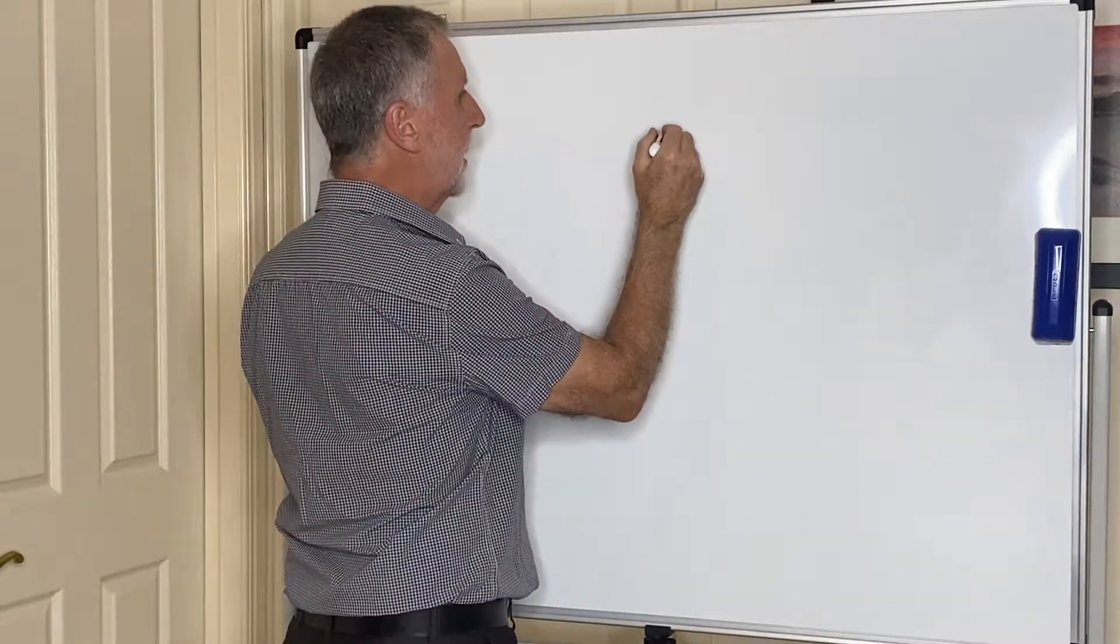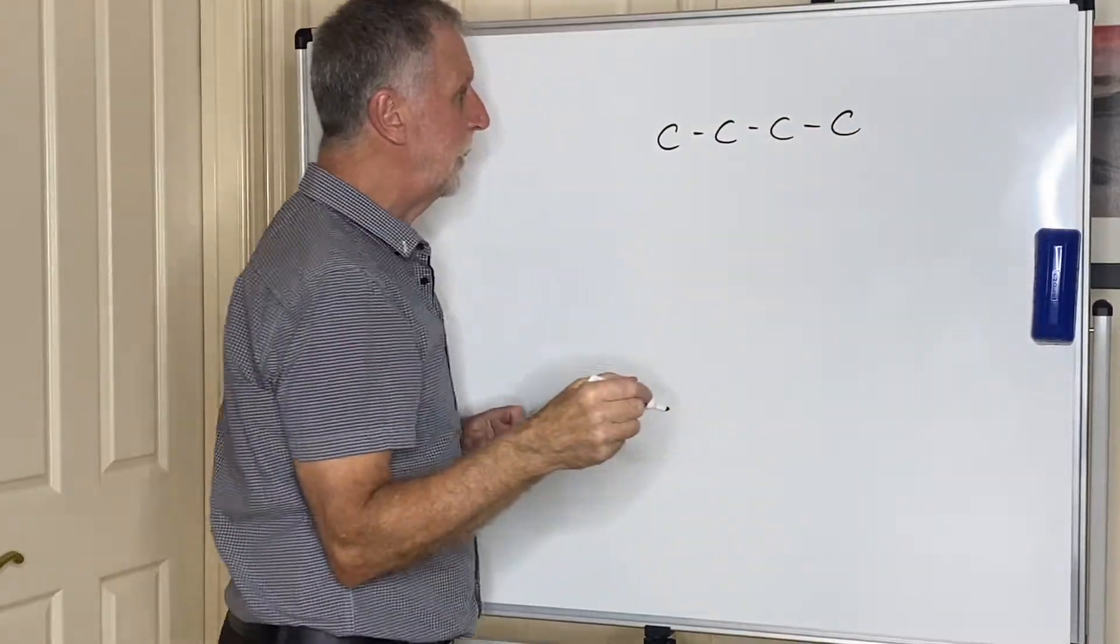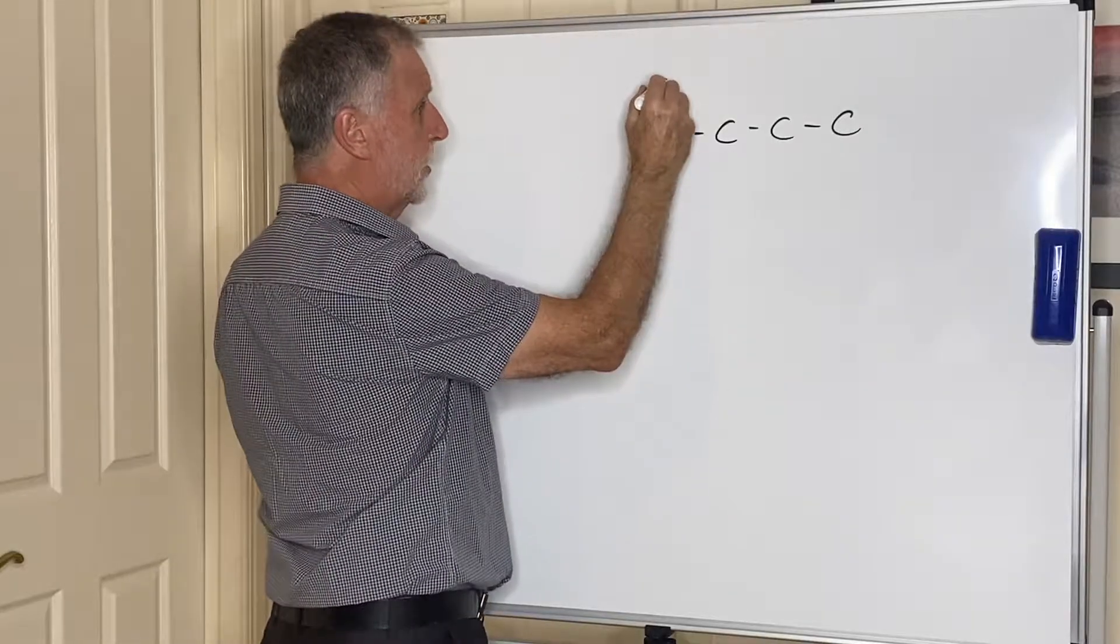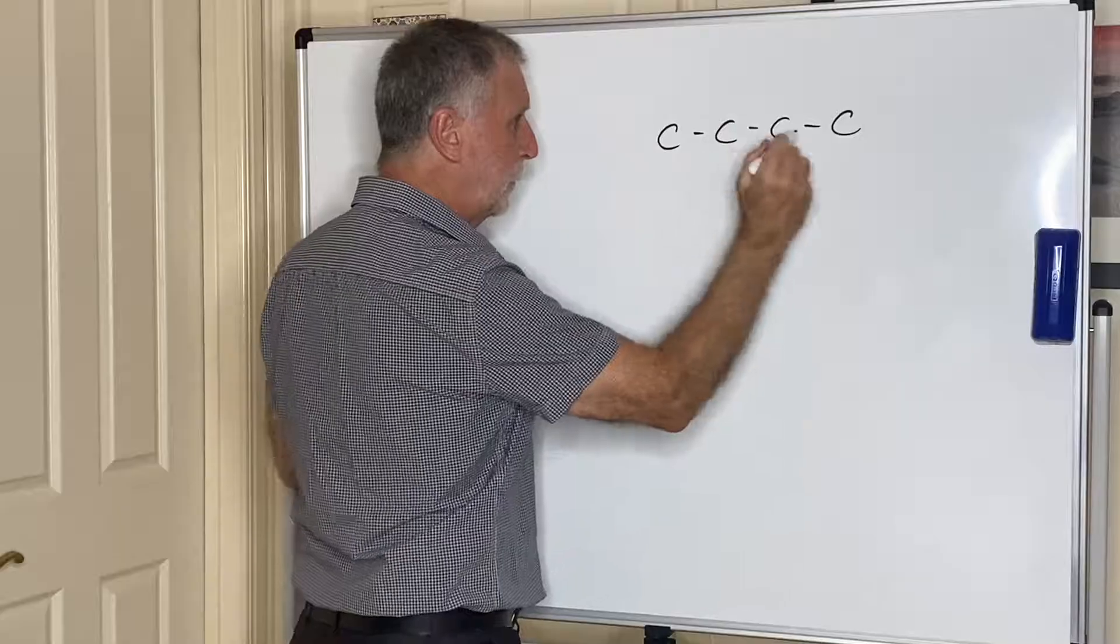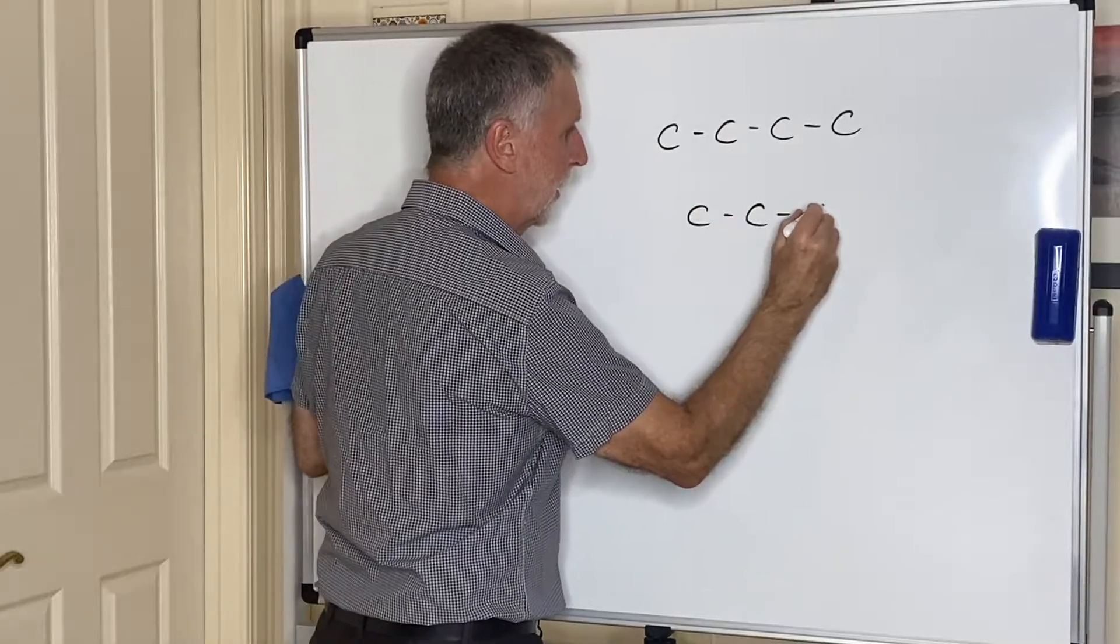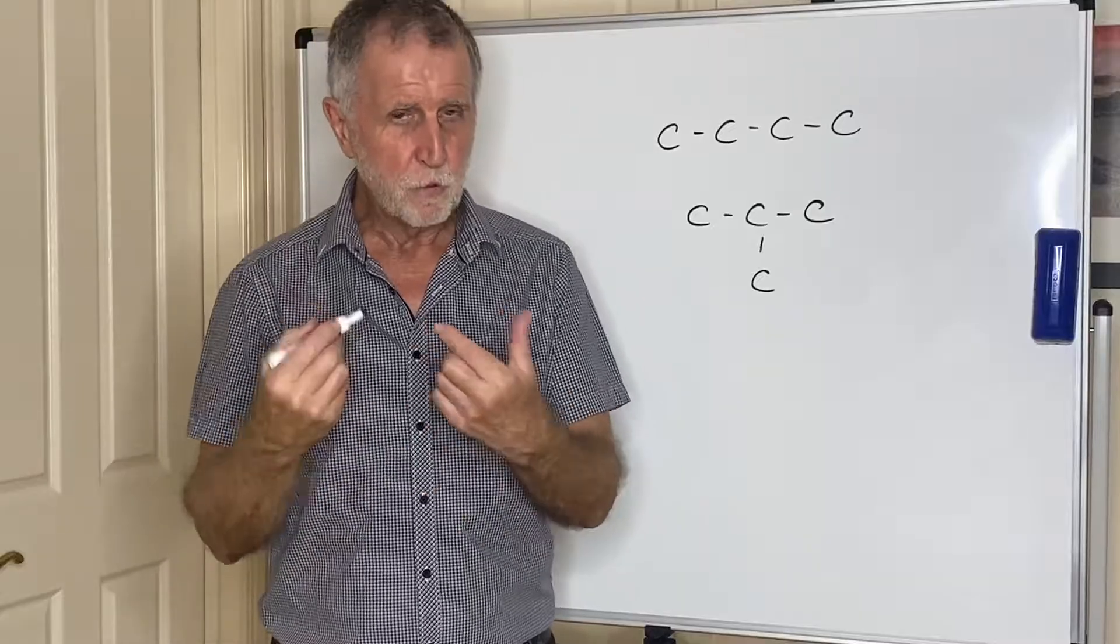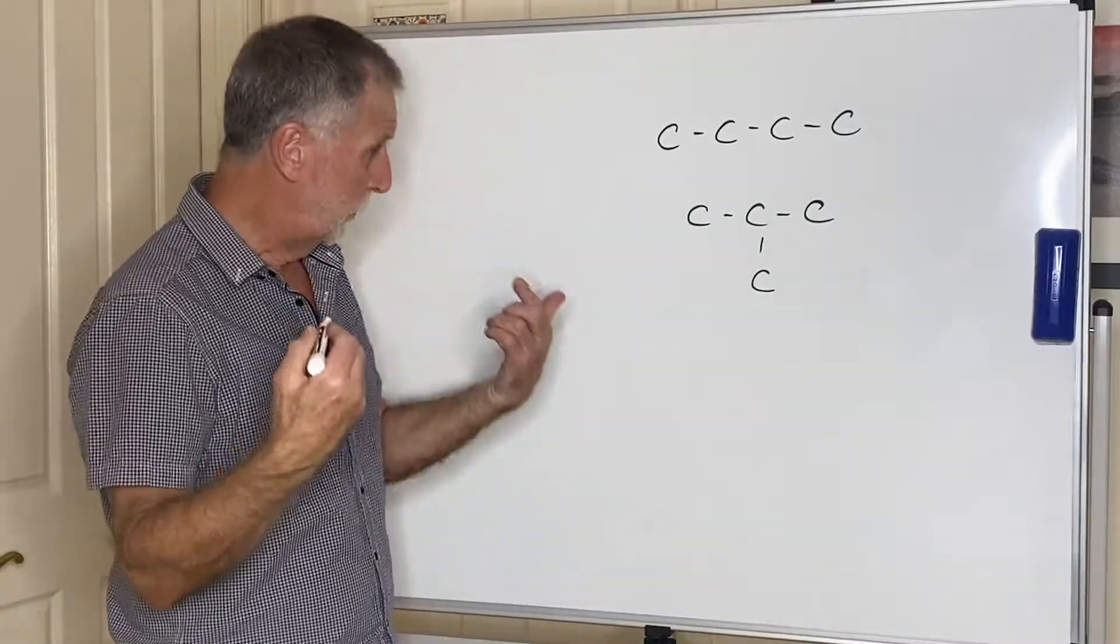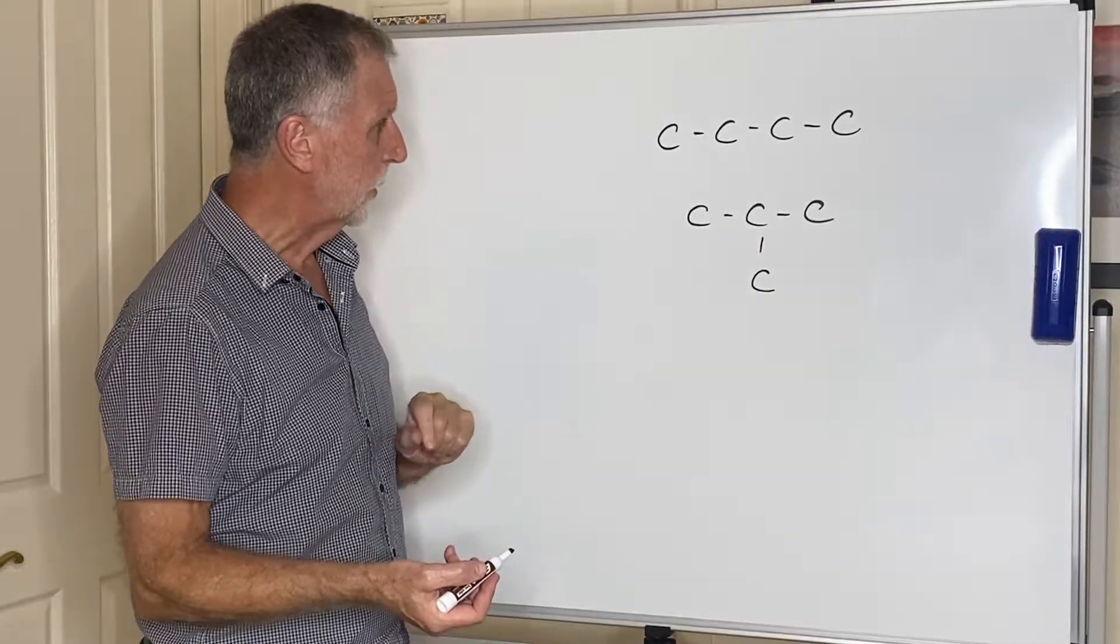But even more than that is the fact that carbon doesn't have to form straight chains. So for example, if we had something like butane, I'm just going to show the carbon skeleton to make it easy to see rather than put the hydrogens in. That full carbon chain could also be written like that. You still have a viable carbon compound where each carbon will have four bonds to it.